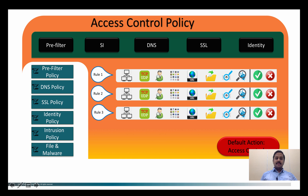On the pre-filter policy you can have multiple pre-filter rules defined within a pre-filter policy, which has its own unique name and is referred to by the access control policy. Similarly, for DNS you can have multiple DNS rules or policies which have their own unique name and are cross-referenced in the access control policy. The same applies for SSL decryption and identity.